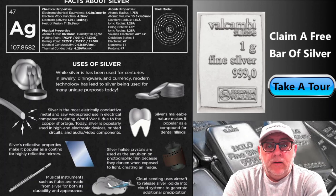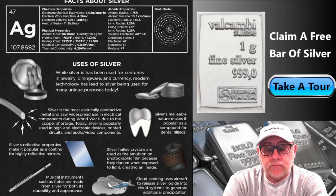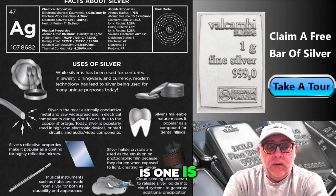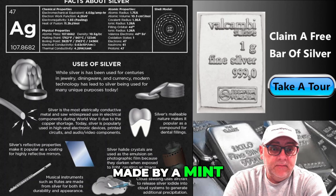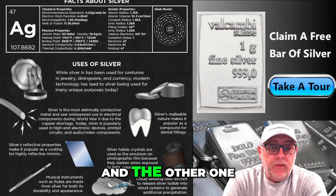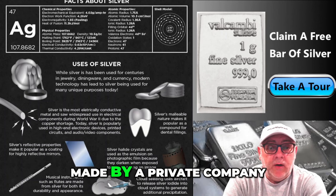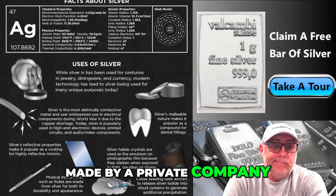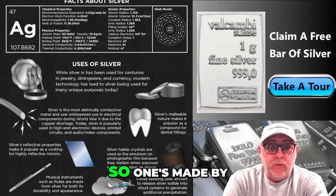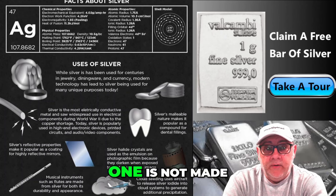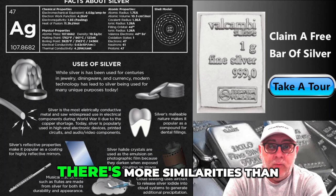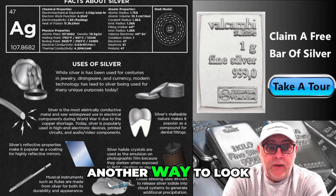The difference between the two is one is made by a government mint — like the U.S. Mint or the Perth Mint — and the other, the round, is made by a private company. So one is made by the government and one is not, and that's really the difference. There are more similarities than differences.